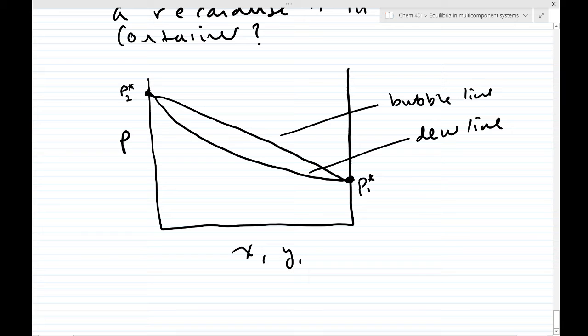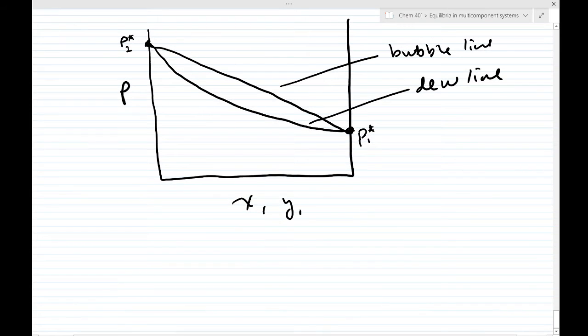So if I give you some solution, for example, a solution that has concentration x1, you find x1 on the curve, let's say this is x1, and you make a vertical line up to the bubble line, the straight line, and then you make a horizontal line across to the dew line. This is called the tie line here. And then if you make a vertical line back down, this gives you y1.